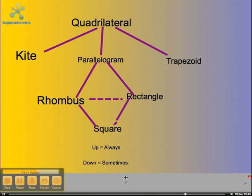And the last rule is left to right is never. So that means a kite is never a parallelogram and never a trapezoid. There is one exception, however. A rhombus is sometimes a rectangle.